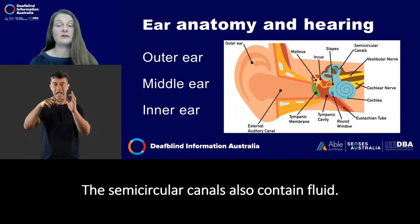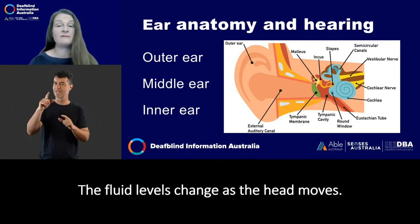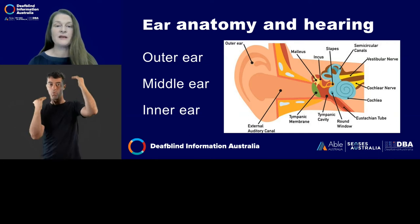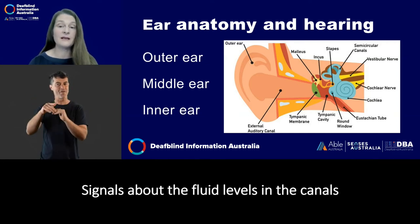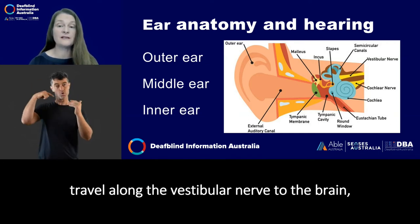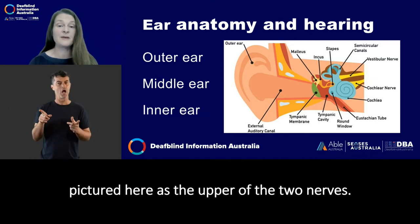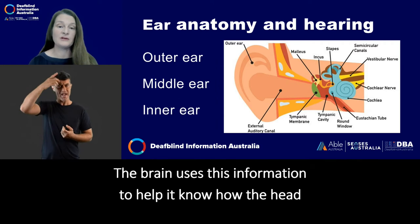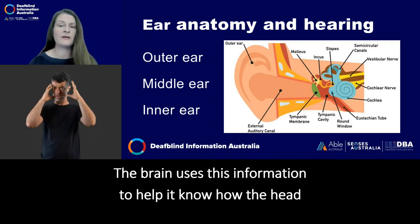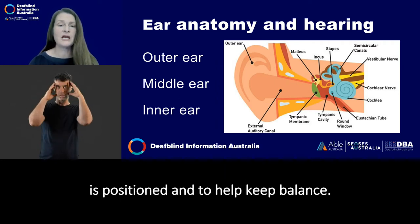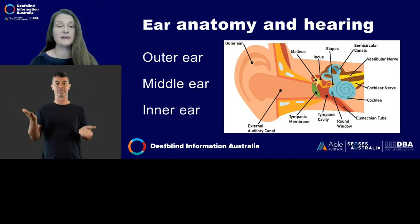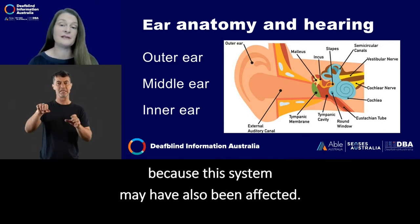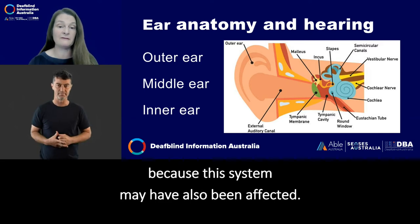The semicircular canals also contain fluid. The fluid levels change as the head moves. Signals about the fluid levels in the canals travel along the vestibular nerve to the brain, pictured here as the upper of the two nerves. The brain uses this information to help it know how the head is positioned and to help keep balance. Some people with hearing loss may have difficulty with balance because this system may have also been affected.